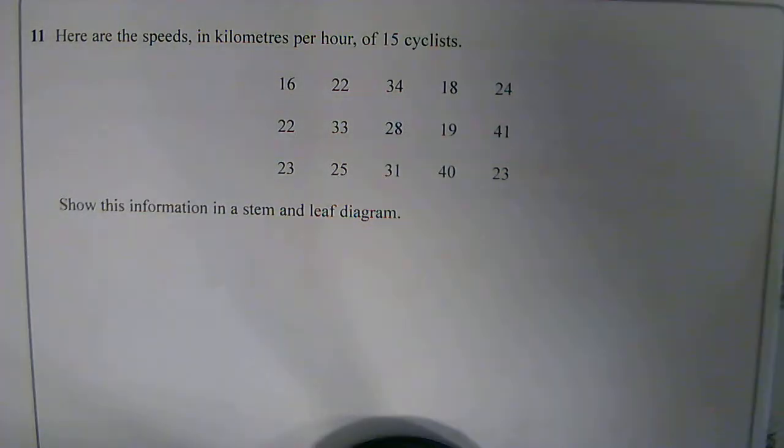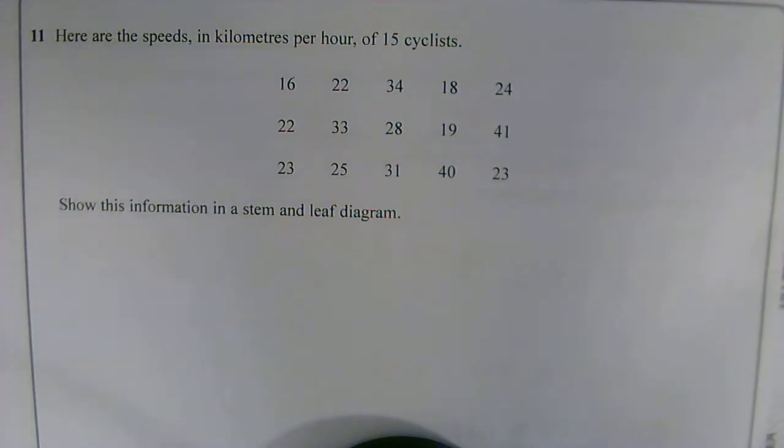Question 11. Here are the speeds in kilometres per hour of 15 cyclists. Show this information in a stem and leaf diagram.